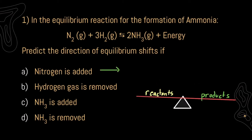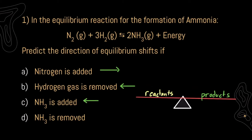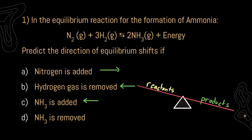For B, we're going to be removing hydrogen gas. We're going to be removing some of our reactants, lowering that side of our seesaw, sending our equilibrium to the left. What happens when ammonia is added? We're going to be adding to our products, so our equilibrium will shift towards our reactants, sending our equilibrium to the left. Now, if we remove ammonia, we're going to be lowering our products. Our seesaw is going to shift towards our products, sending our equilibrium to the right.